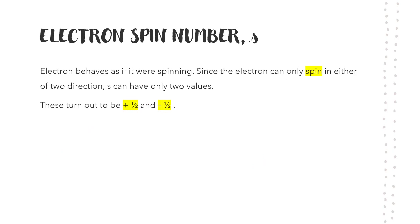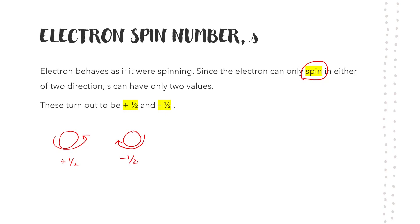Spin — electron spin number. This is very easy. S is actually spin. The number can be positive half or negative half. This is not a value — it is just orientation. If I draw orbital S, it can spin in one direction — that is positive half. If it spins the other way, that is negative half. The numbers positive half and negative half do not give you a magnitude value; they just show the direction of spin — clockwise or counterclockwise — for the electron.